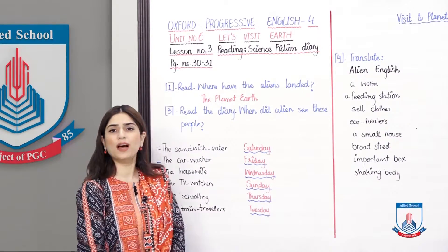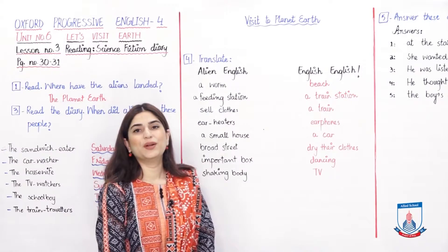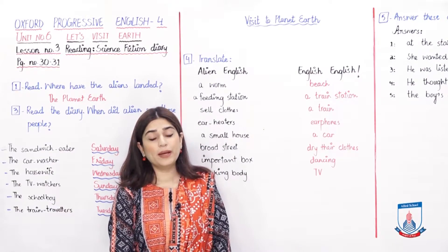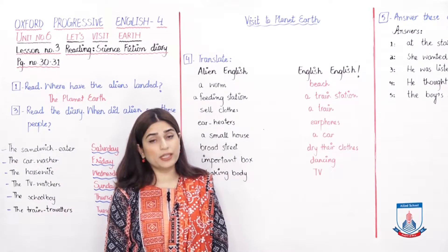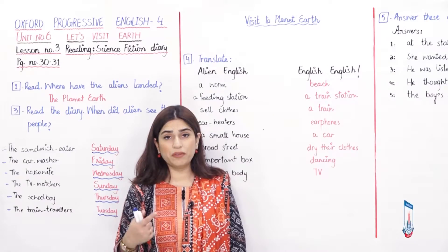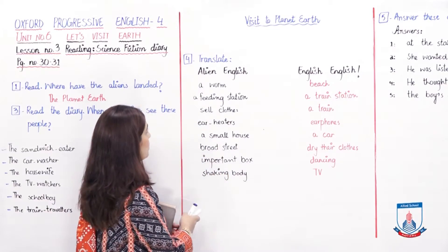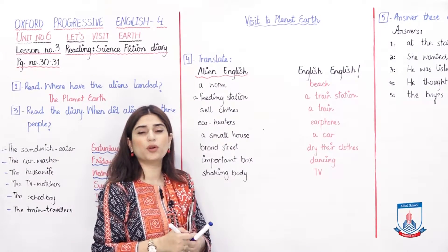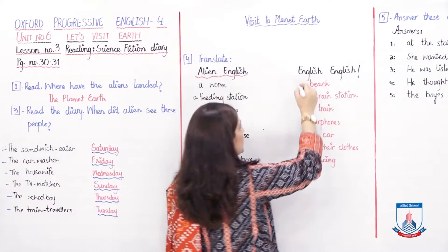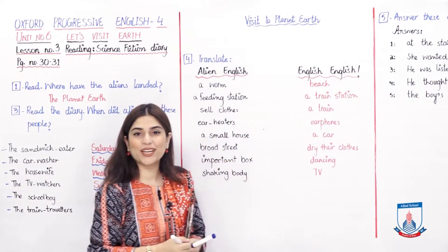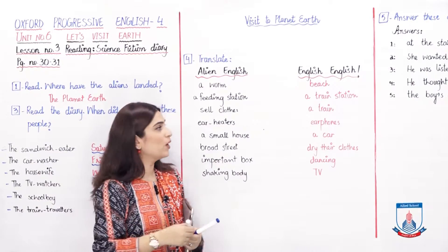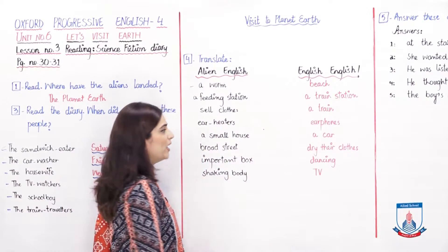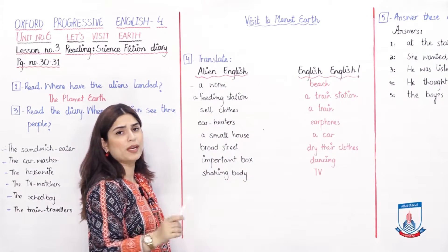All right, now after this exercise we are moving on to the next exercise. So children, this alien — when you will read, whatever information we filled in the diary, it will be revised for you. Next is exercise no. 4: Translate. We have to translate — what? 'Alien English' is a language spoken by people from another planet, and 'English English' is the English that we/English people speak. We will read a word from one side and see how it matches with our English.